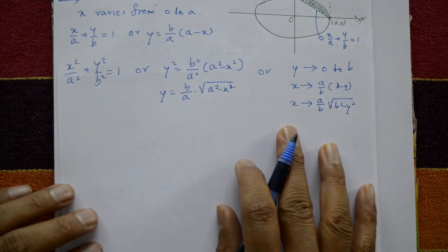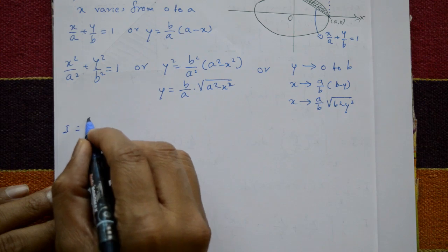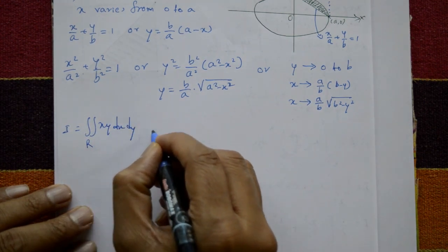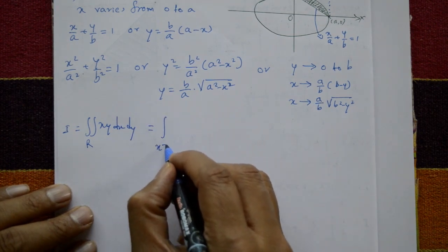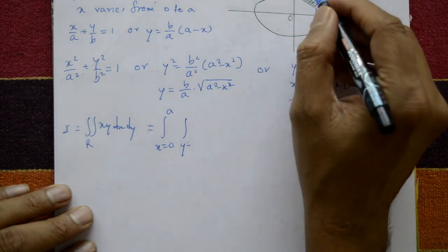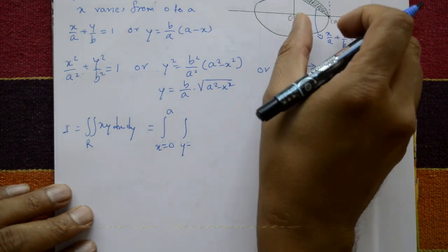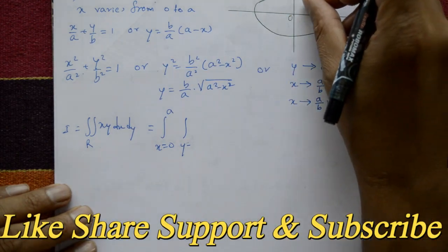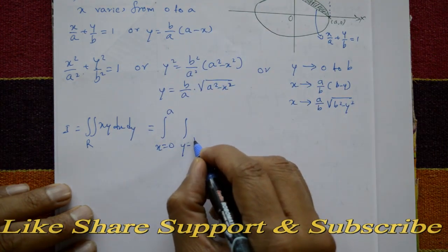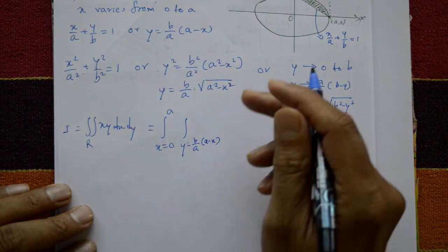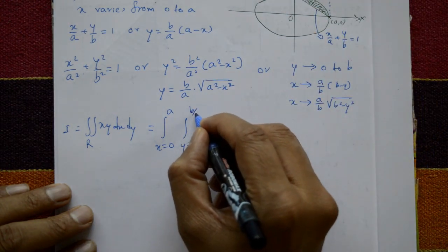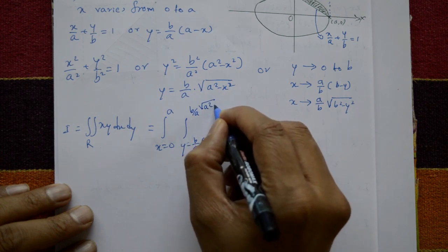Let I = ∬_R xy dx dy. Writing with dy dx: I = ∫₀ᵃ ∫_{b/a·(a−x)}^{b/a·√(a²−x²)} xy dy dx, where x goes from 0 to a, the lower y-limit is the straight line b/a·(a−x), and the upper y-limit is the ellipse b/a·√(a²−x²).